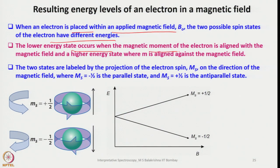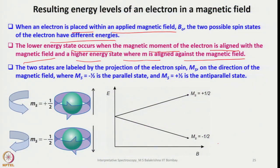The lower energy state occurs when the magnetic moment of the electron is aligned with the magnetic field, and the higher energy state is where it is aligned against the field. In NMR, the state aligned with the field has the lowest energy, that is plus half; here it is the opposite. The two states are labeled by the projection of electron spin M_s: M_s equals minus half is the parallel state and M_s equals plus half is the anti-parallel state.